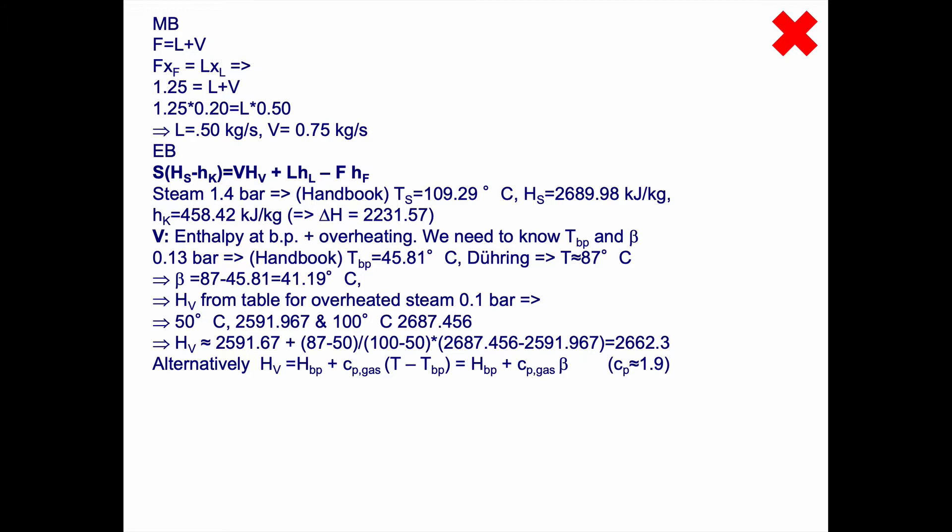The other version is to take the enthalpy at the boiling point plus the Cp for the gas times the boiling point elevation. Cp for the gas is approximately 1.9. You can look that up in the table. The Cp changes a bit with temperature. If I calculate that, I get 2662.1, approximately the same as 2662.3, so it seems okay.